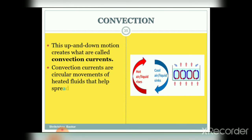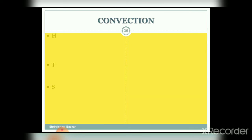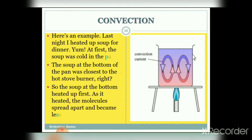This up-and-down motion creates what is called a convection current. Convection currents are the circular movement of heated fluids, which helps to spread the heat. Here is an example: last night I heated up soup for dinner. At first the soup was cold in the pan. The soup at the bottom of the pan was closest to the hot stove burner, so the soup at the bottom heated up first. As it heated, the molecules spread apart and became less dense, so the heated soup rose up to the top.